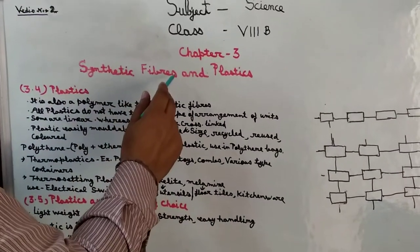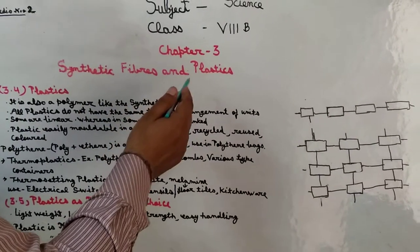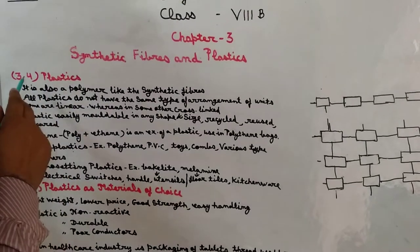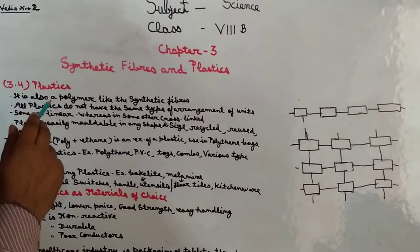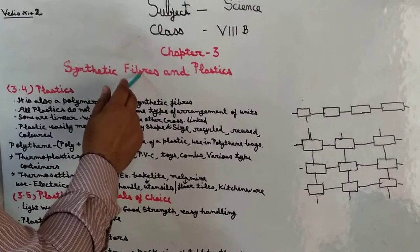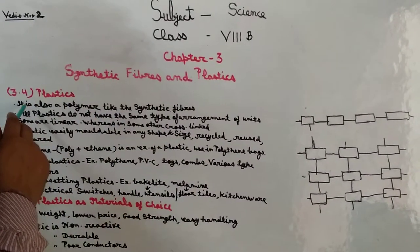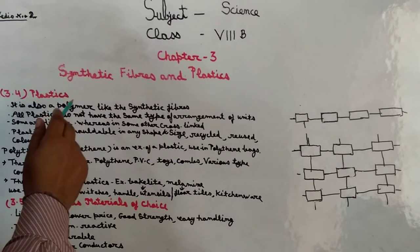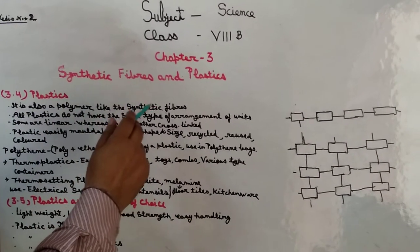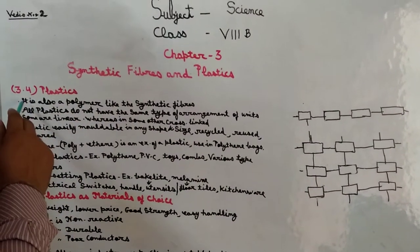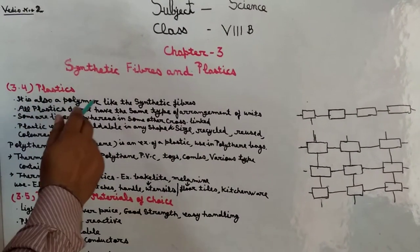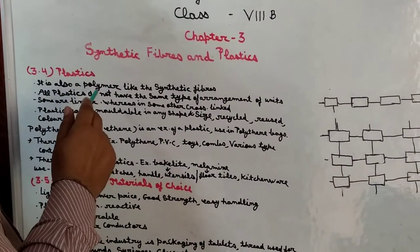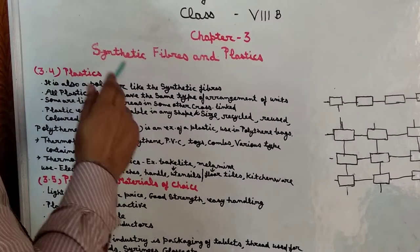Synthetic fiber के बारे में तो हम discussion कर चुके हैं, आपको समझा चुके हैं. आज हम plastic के बारे में आपको समझाएंगे. Topic है plastics. Plastic भी synthetic fiber ही होता है, because it is made of the same type of unit. It is also a polymer like synthetic fiber.